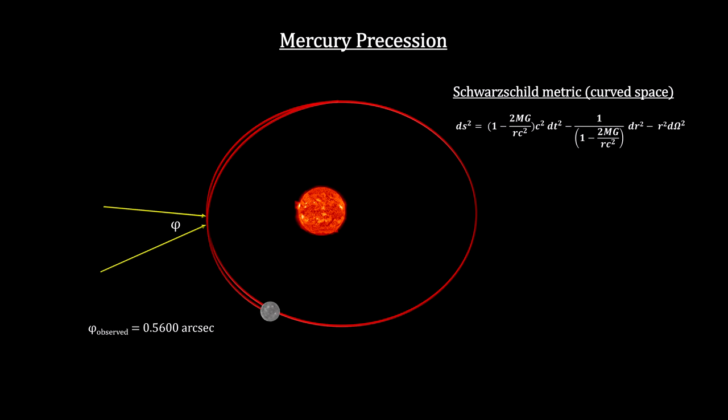Taking into account all the perturbation effects from all the other planets, as well as a very slight deformation of the Sun due to its rotation, and the fact that the Earth is not an inertial frame of reference, Newton's equations predict a precession of 0.5557 arcseconds. That's 0.0043 arcseconds short.